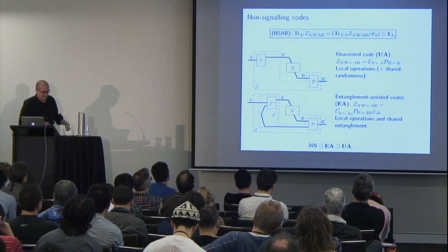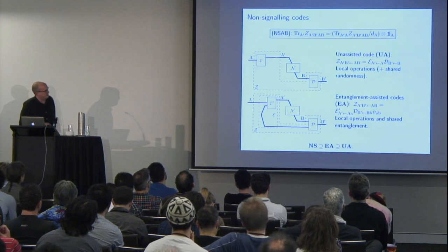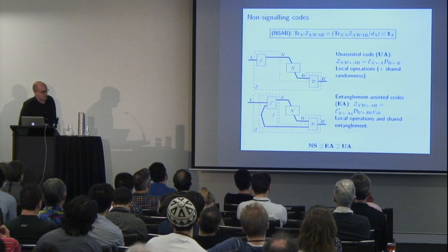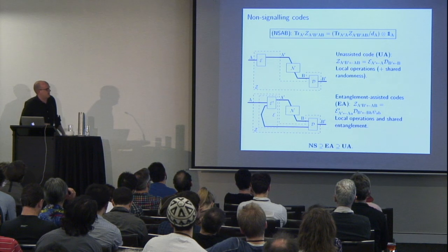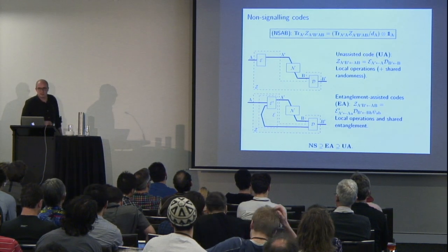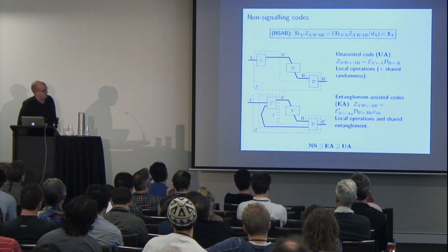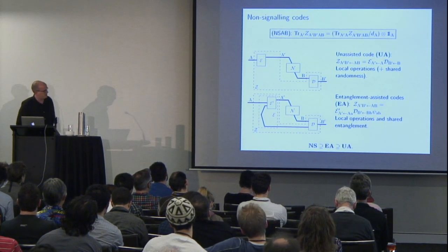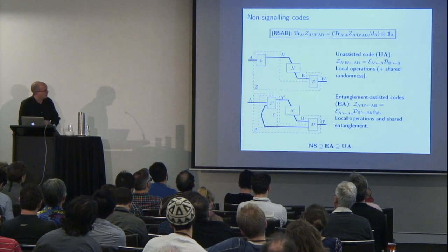An obvious constraint to apply is that the bipartite operation is also non-signaling from Alice to Bob, which certainly applies to unassisted codes where the bipartite operation consists of local operations. To make the set nicer, we can include shared randomness — this doesn't change the performance but makes the set convex. The set also includes entanglement-assisted codes where encoding and decoding operate on shared entanglement, corresponding to local operations and shared entanglement. So: unassisted is included in entanglement-assisted, which is included in non-signaling.